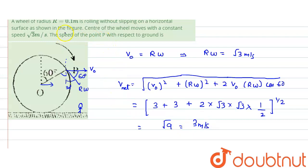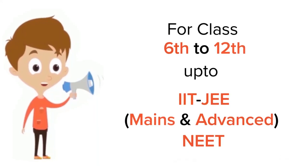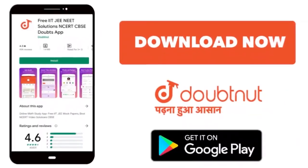We need to find the magnitude, it is equals to 3 meter per second. Hope you understood the solution. Thank you. For class 6 to 12th, IIT, JEE and NEET level, trusted by more than 5 crore students, download Doubtnet app today.